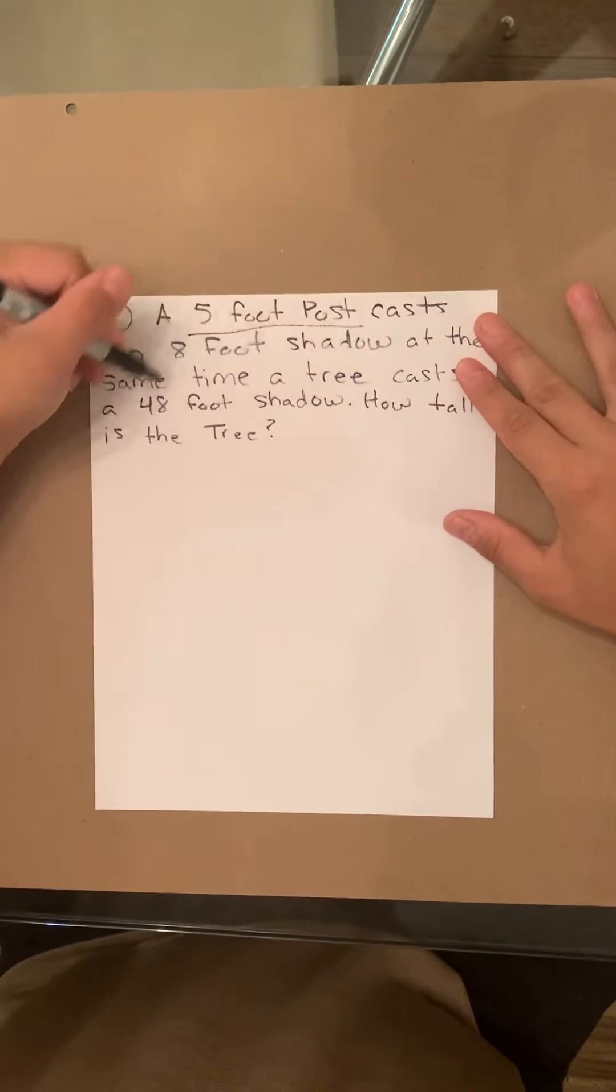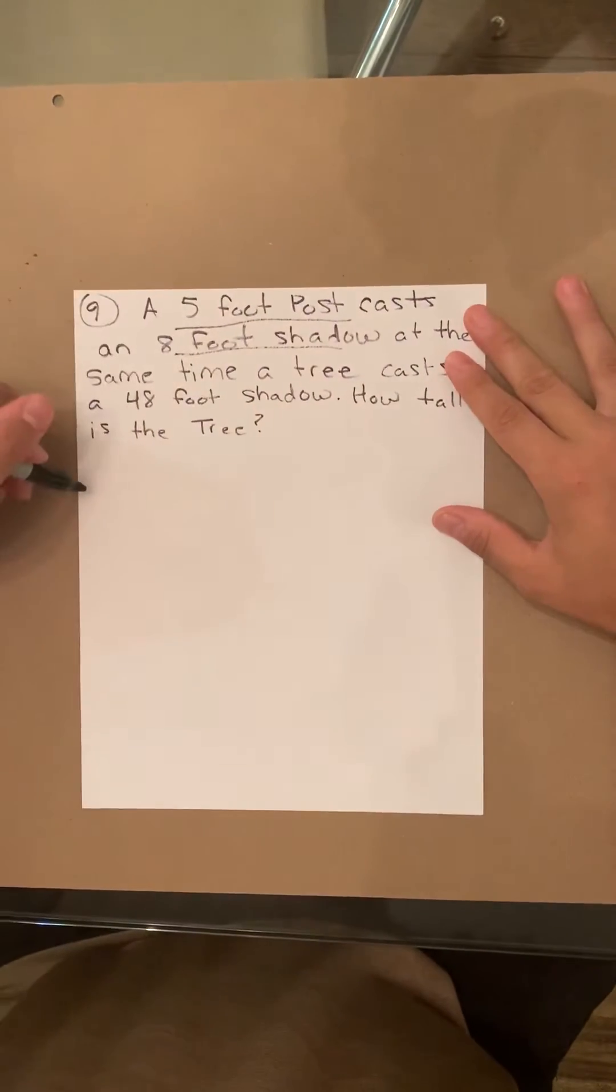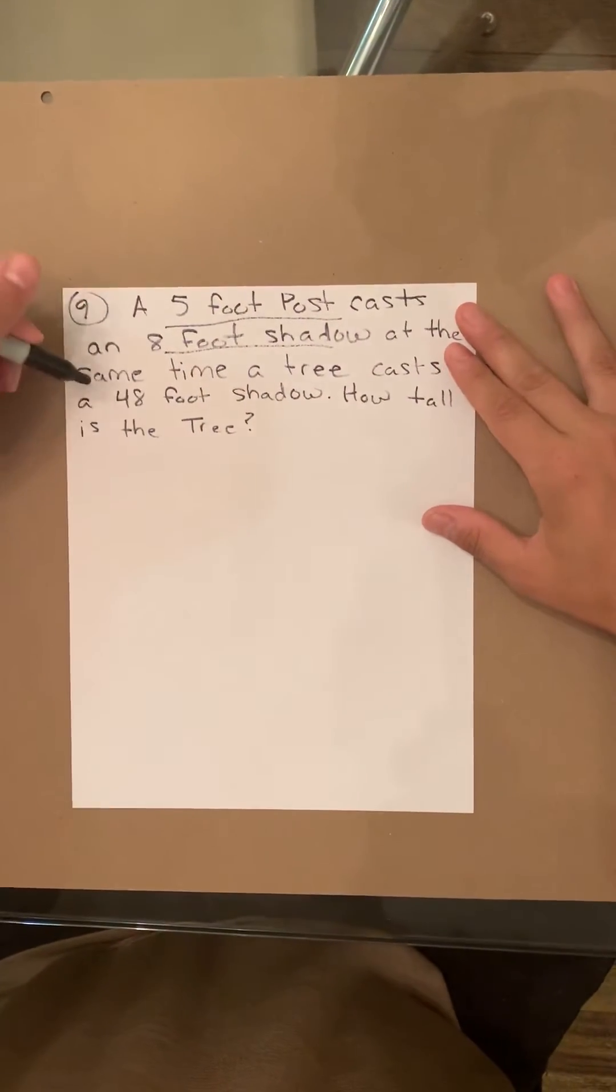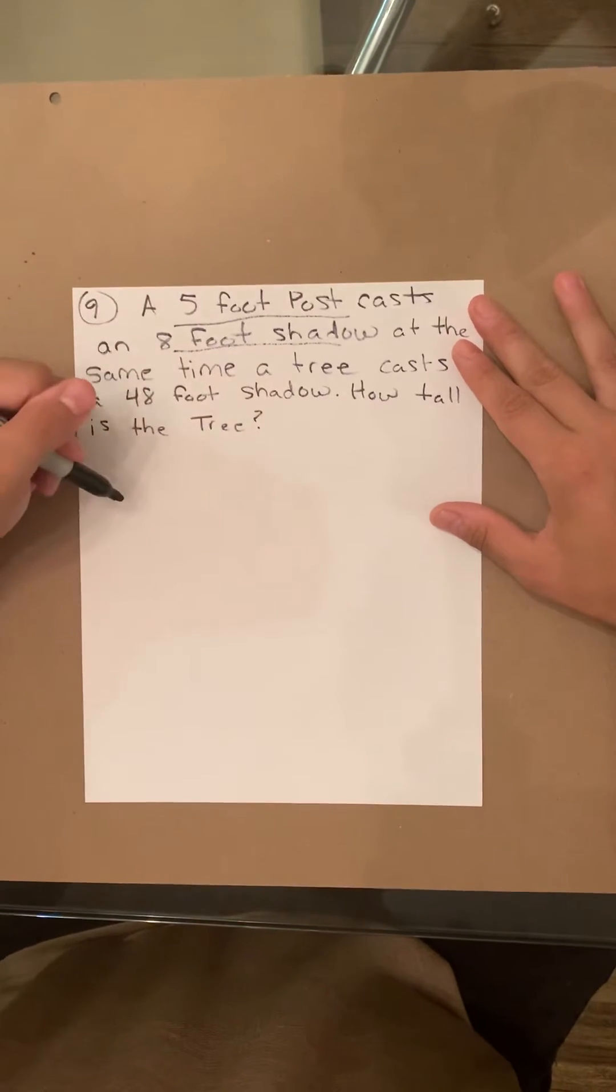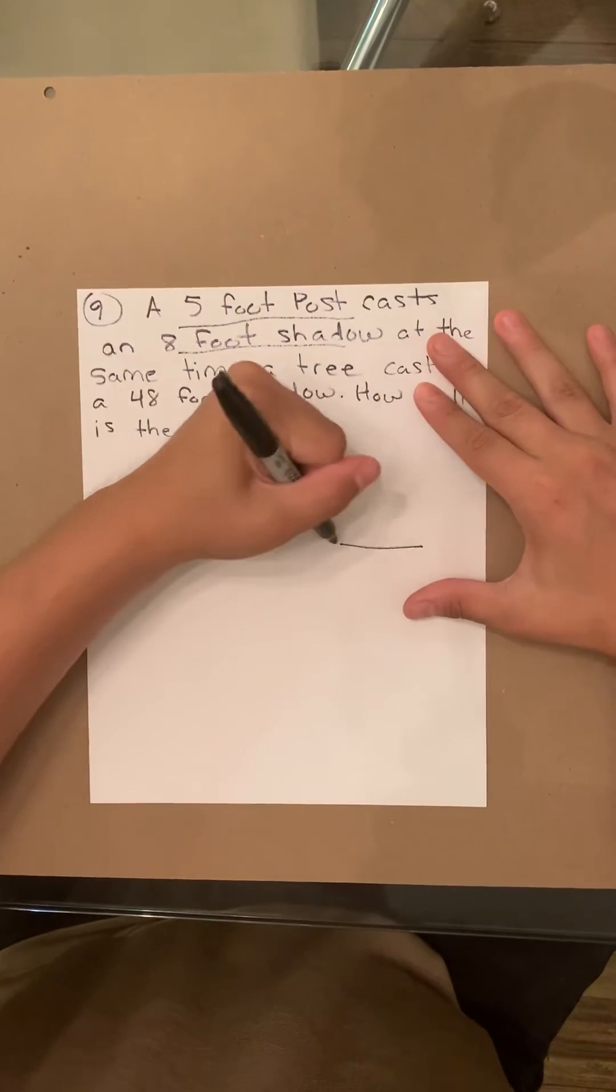So, a 5 foot post casts an 8 foot shadow, and we're trying to find out the length of the tree for the 48 foot shadow. So first, let's draw it.